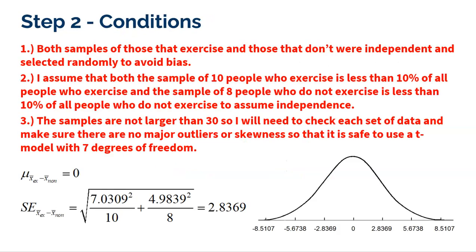The conditions, not a ton of fun I know, but we've got to go through all those conditions. Got to be random samples to avoid bias. Because we are randomly selecting our samples from the population, this was not an experiment. We do need to make sure that they were both under 10% of populations to assume independence.